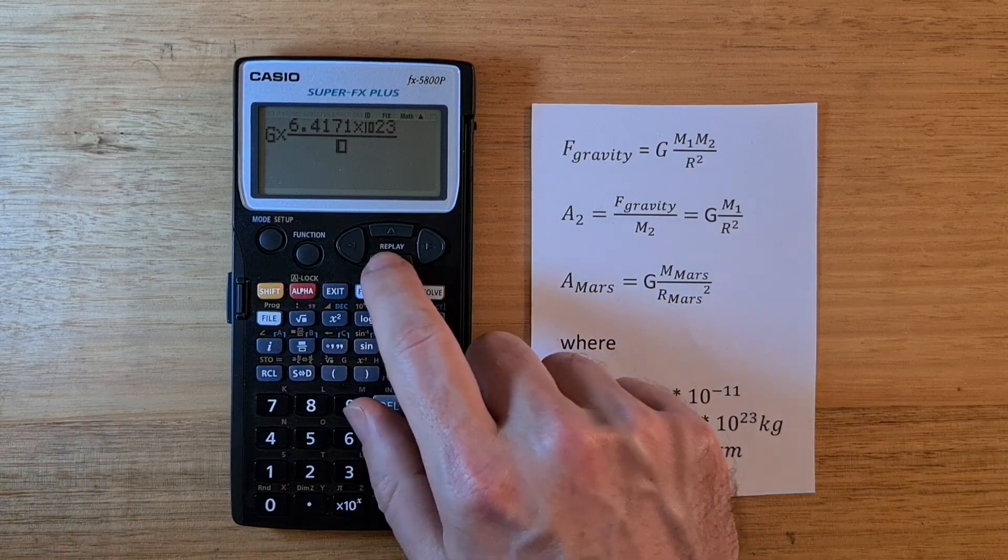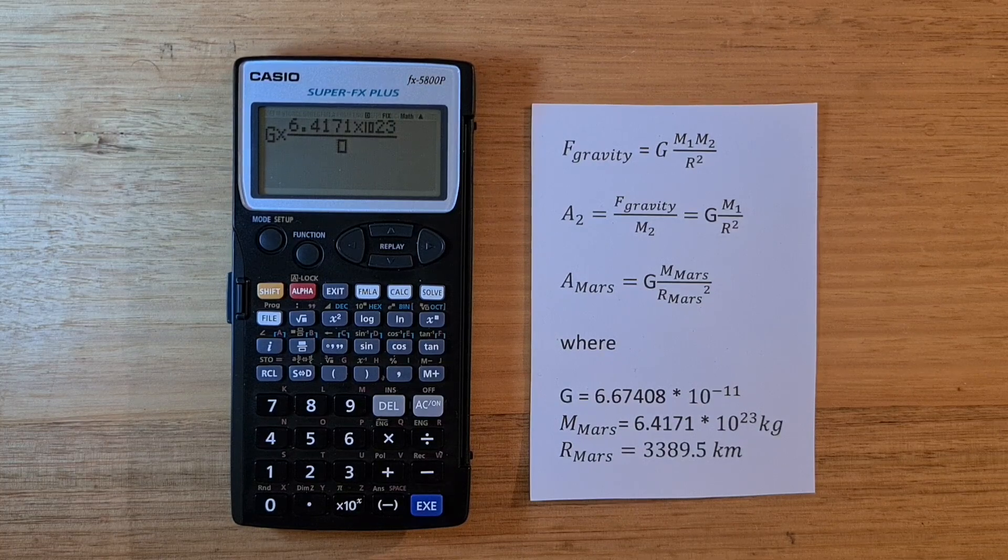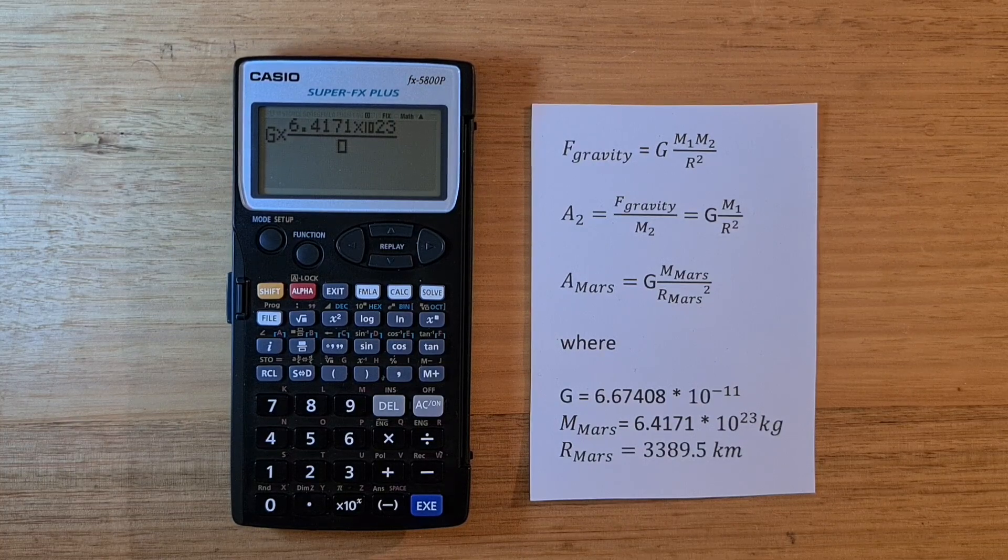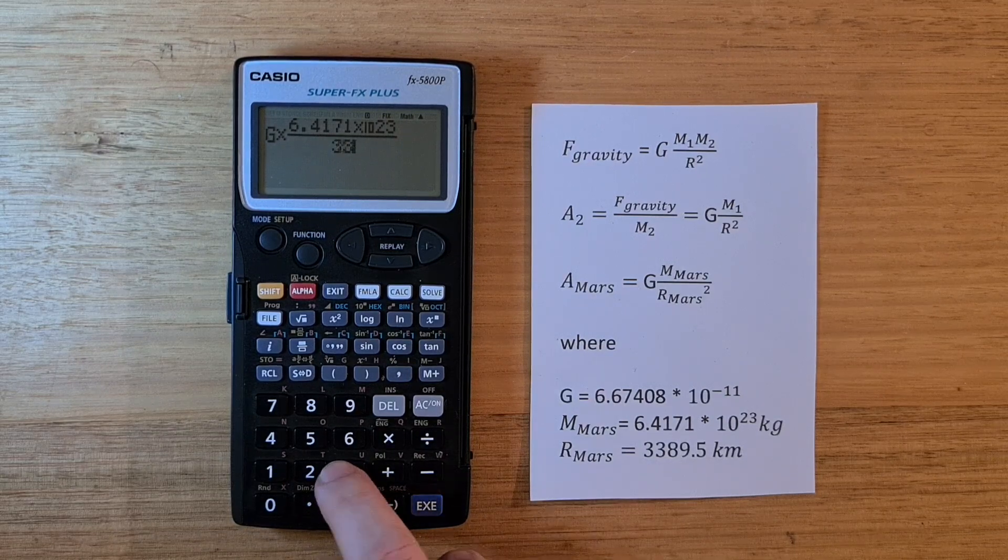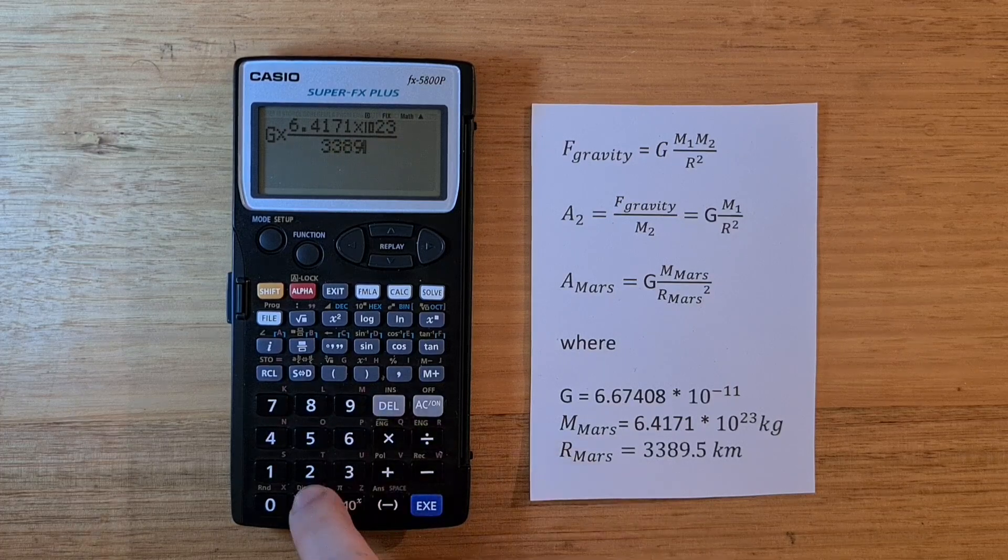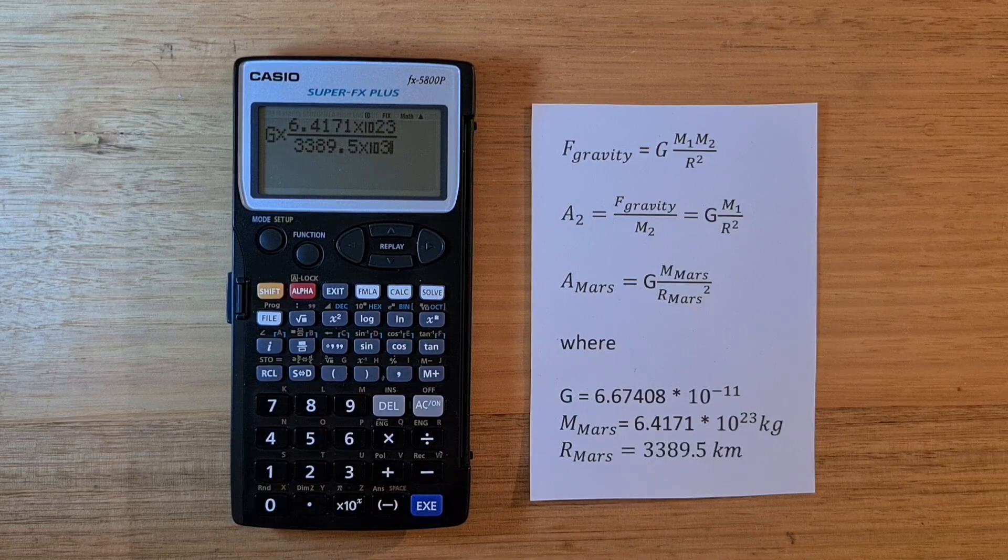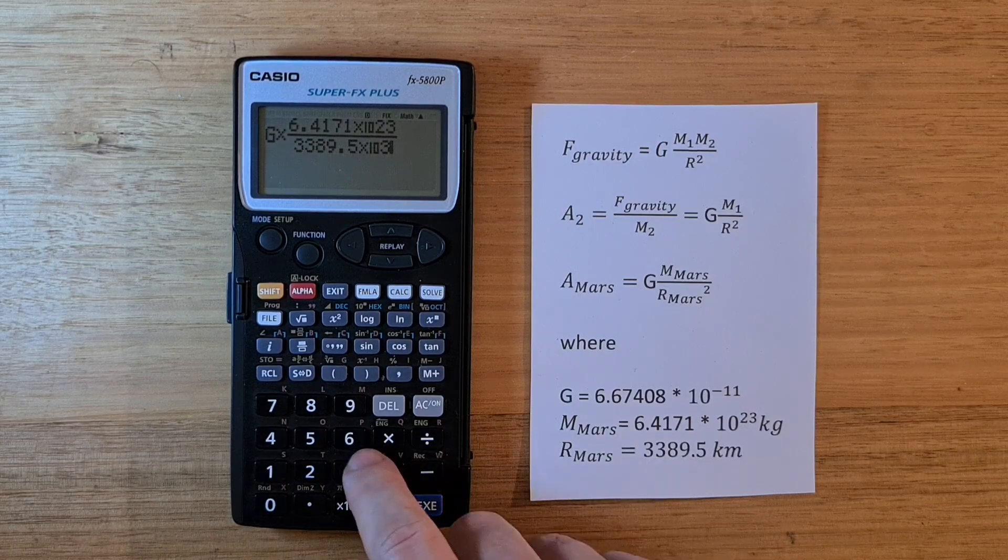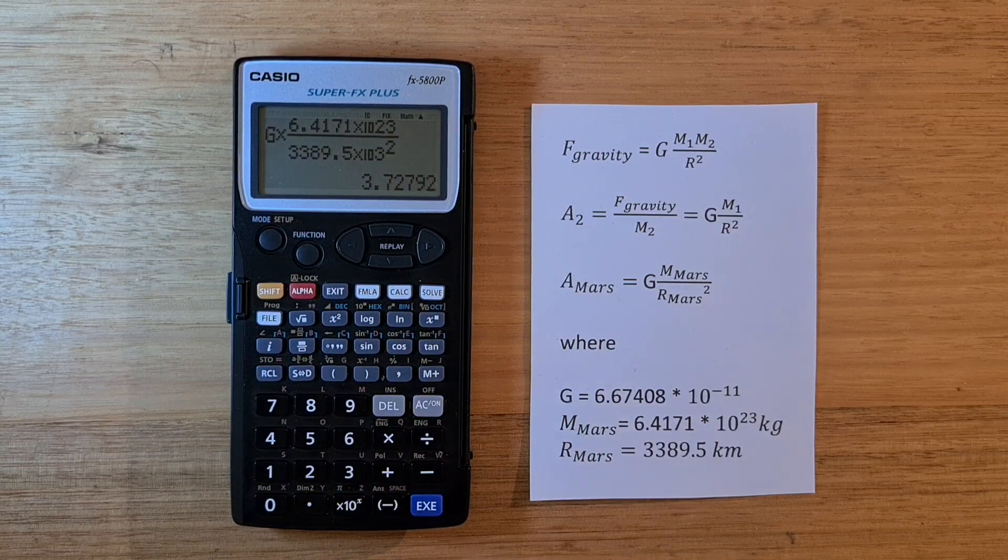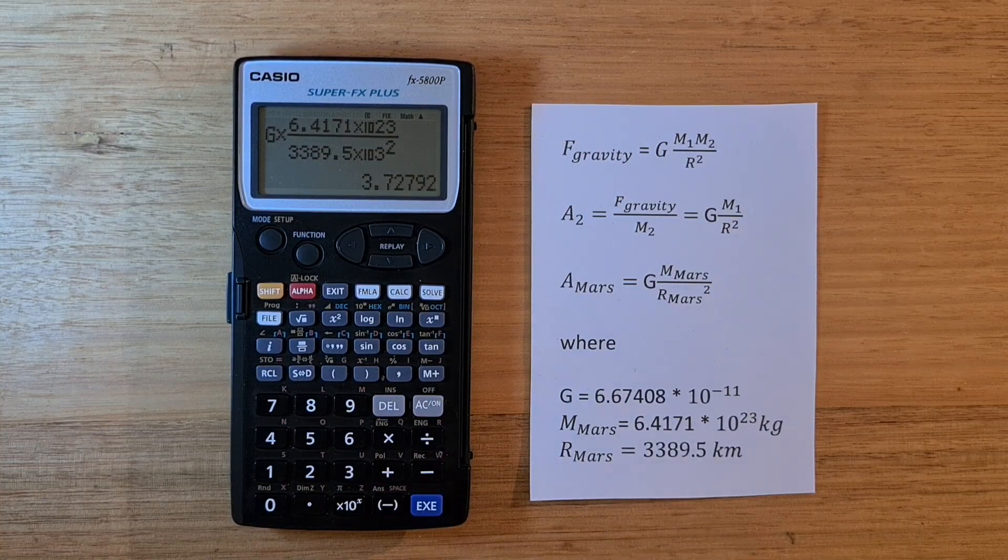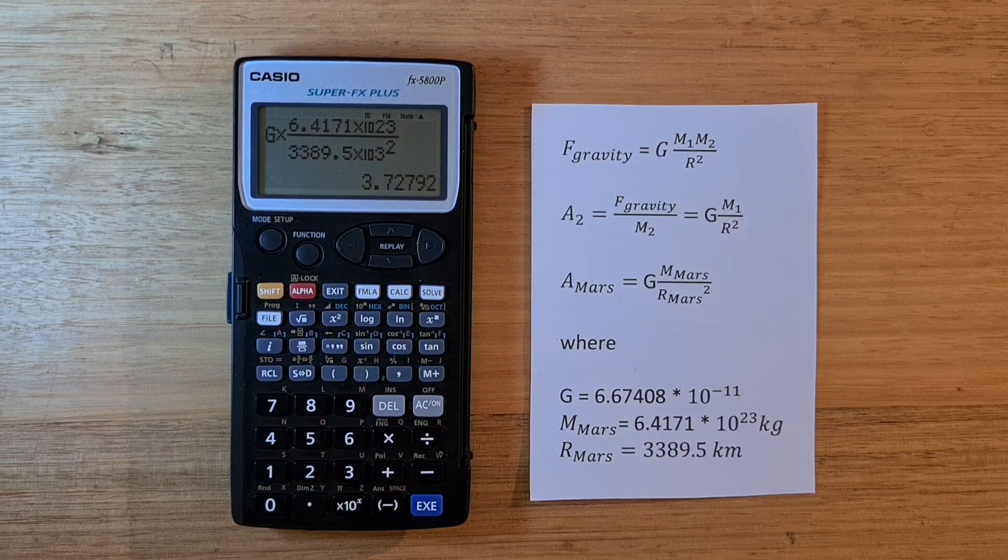Now we can use the cursor key to select the denominator. And we enter the average radius of Mars in meters. So that's 3389.5 kilometers. So we go times 10 to the 3. And we need to square the radius. Now we can hit exe to calculate the answer, which is 3.728 approximately meters per second squared.